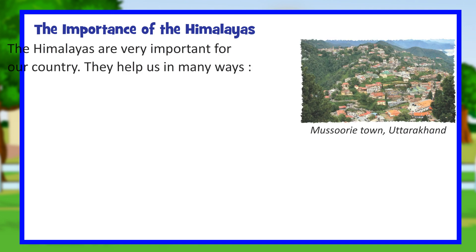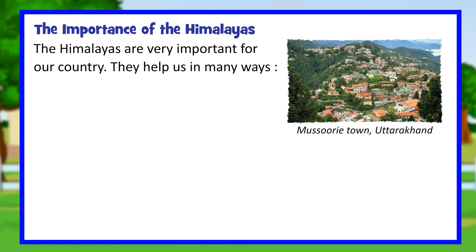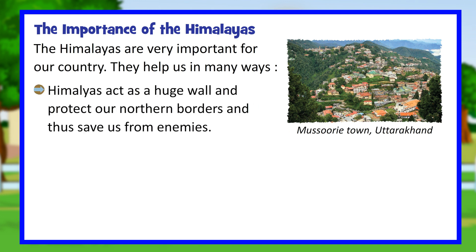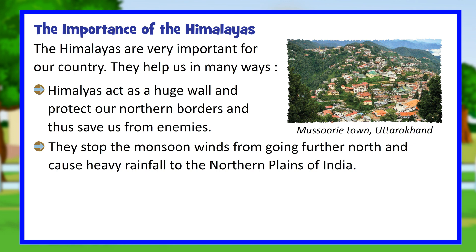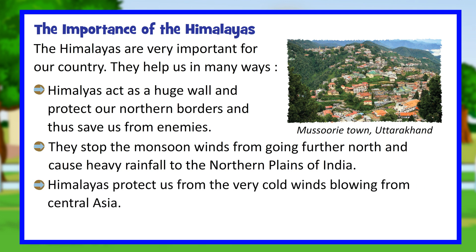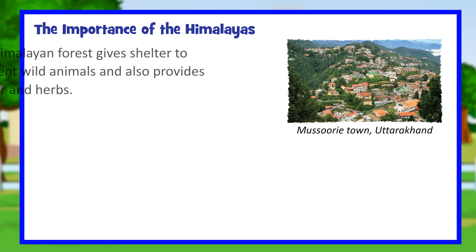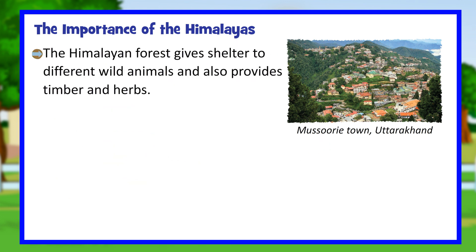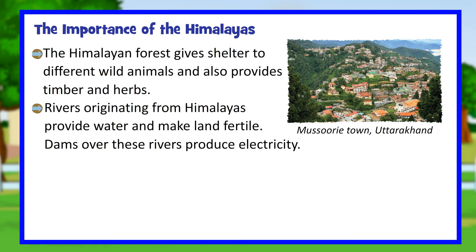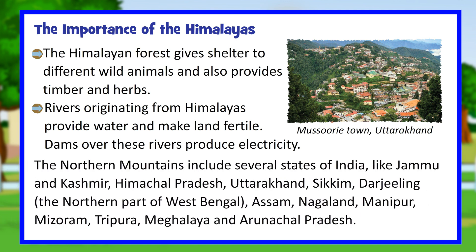The Himalayas are very important for our country and help us in many ways. They act as a huge wall protecting our northern borders from enemies. They stop monsoon winds from going further north, causing heavy rainfall to the northern plains of India, and protect us from very cold winds blowing from Central Asia. The Himalayan forests shelter different wild animals and provide timber and herbs. Rivers originating from the Himalayas make land fertile, and dams built over these rivers produce electricity.